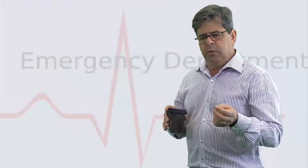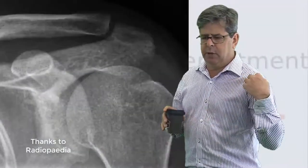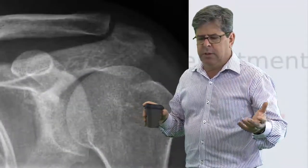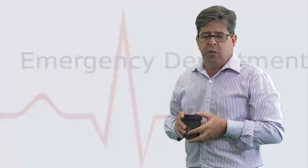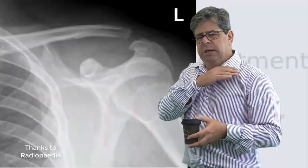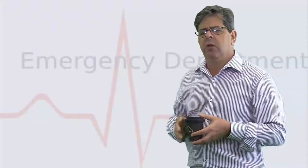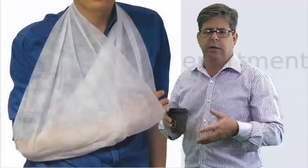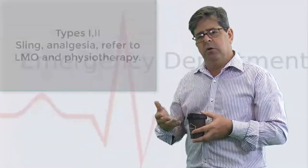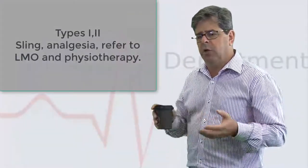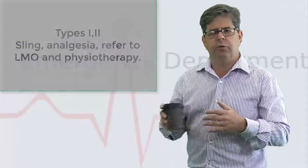What do we do for them? Well the grade one, there's tender over the area, no problems on the X-ray, and grade two where it's tender but it's not particularly lifted up, the conoid and trapezoid ligaments seem to be intact. Those ones we just have a sling, non-steroidal anti-inflammatory drugs, and refer to the local doctor and physio. Often they're able to go back to sport within two to four weeks.